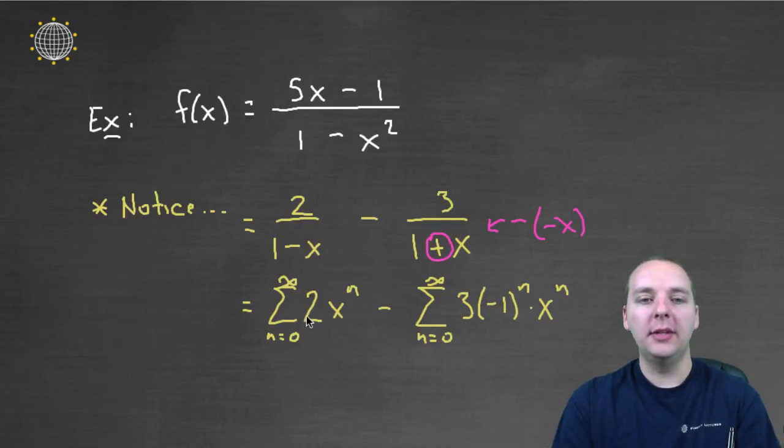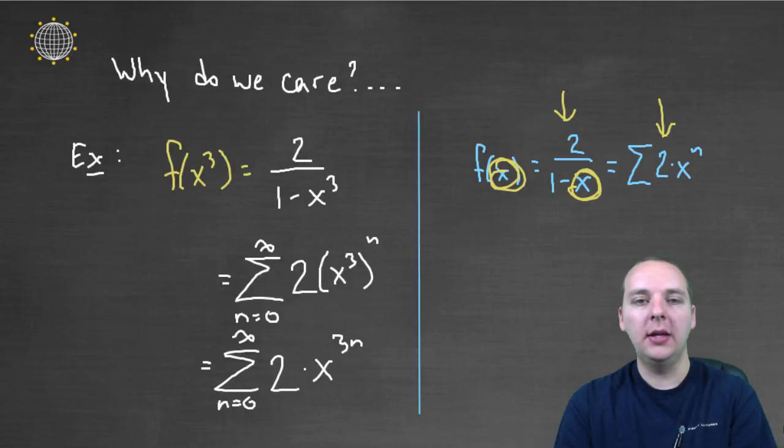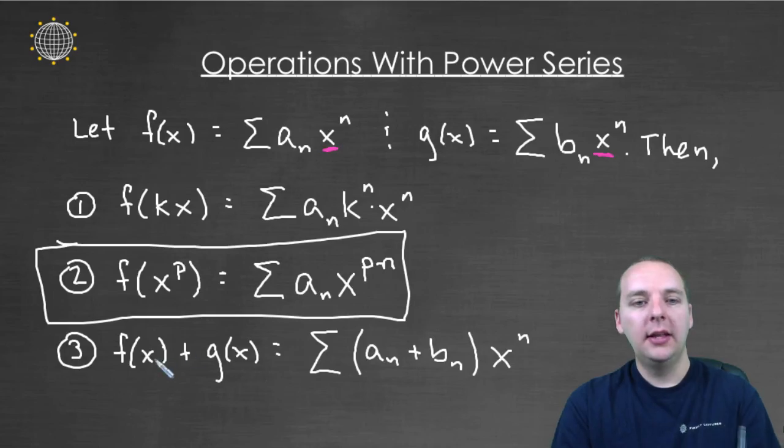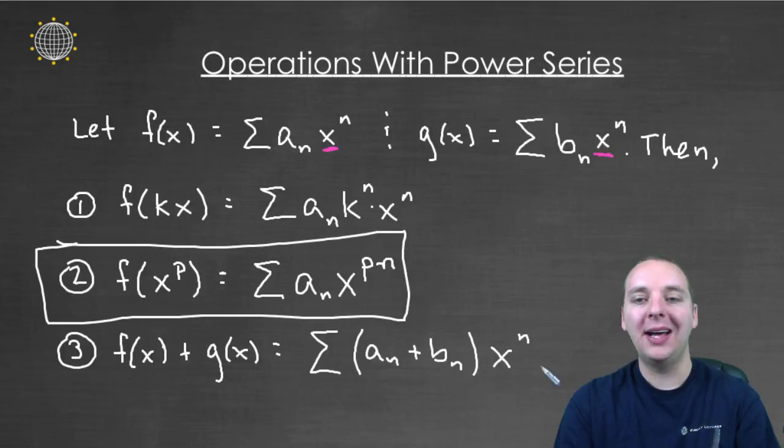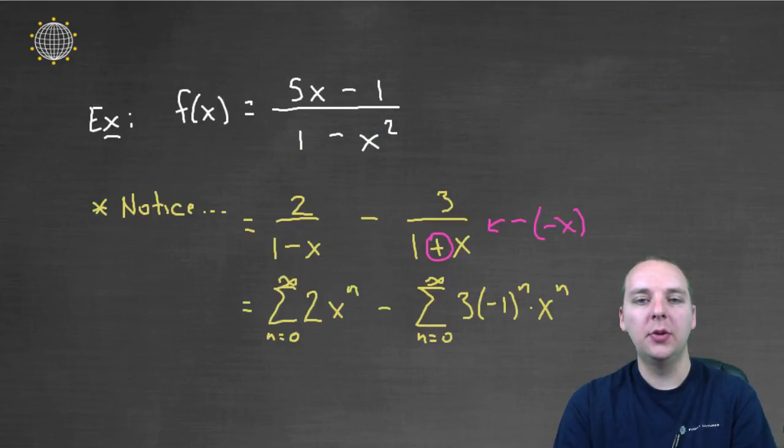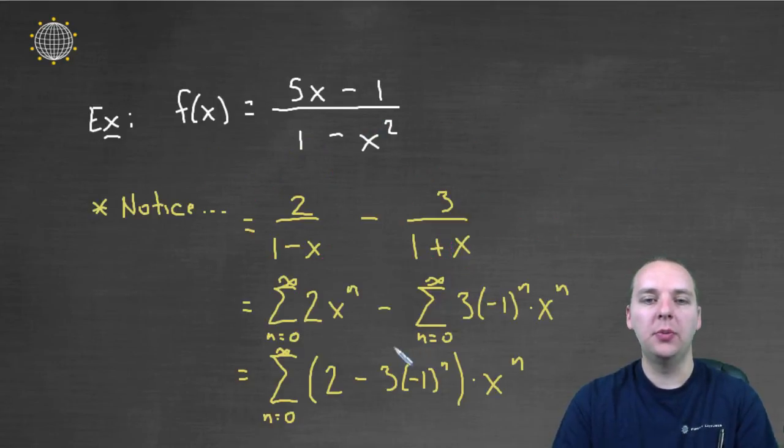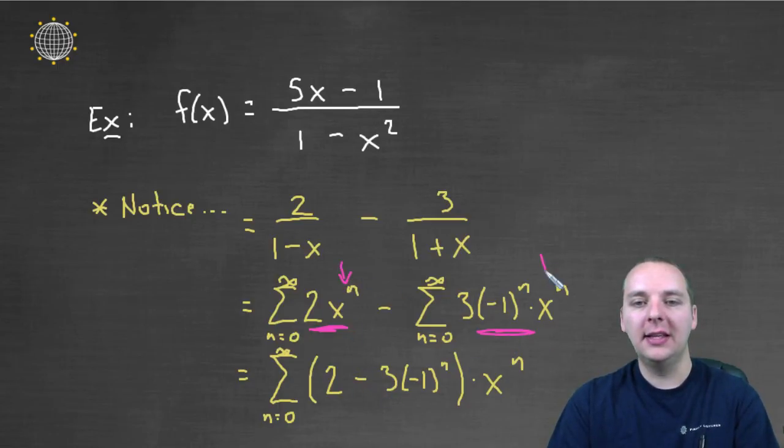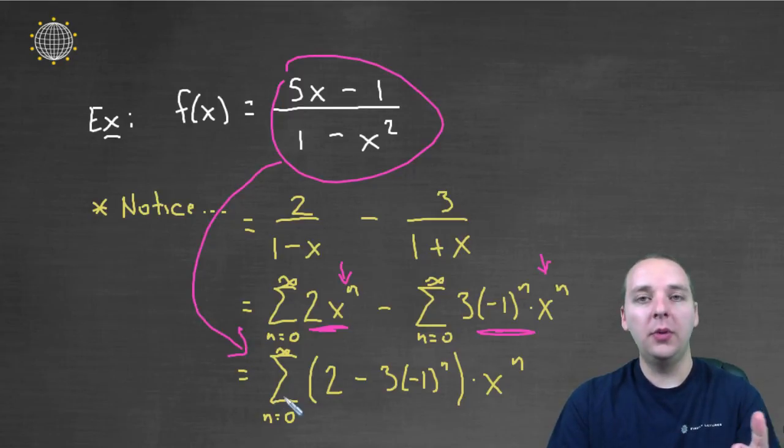My point is simply that we can write each of these as a power series. But now what do we have? We have the sum or difference of two different power series and that property that we had back here said that if you have the sum of two power series you can combine these into a single power series. So what we can do here is we can write one giant series and we'll have this common term and this common term being subtracted and since they both have an x^n we can pull that x^n.